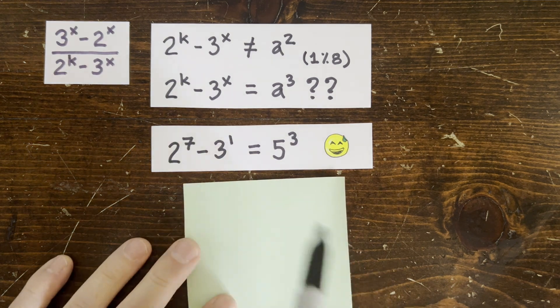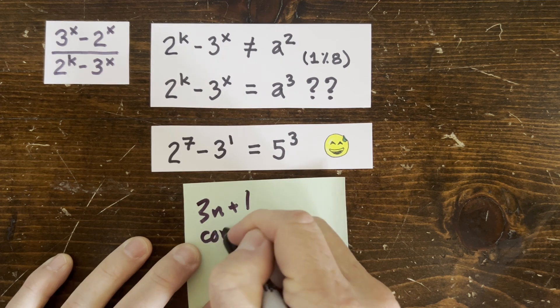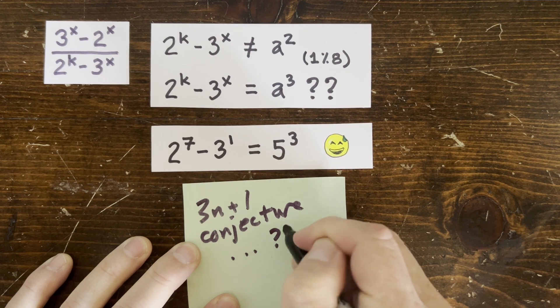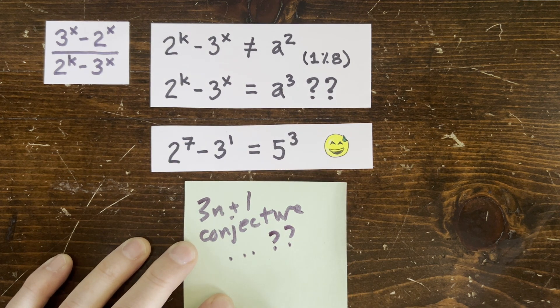But still, what if the whole 3n plus 1 conjecture were true without any reason for it to be true? I mean, what if it just happened to be true? So that's some food for thought. Okay, see you next time.